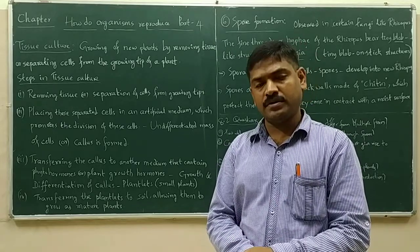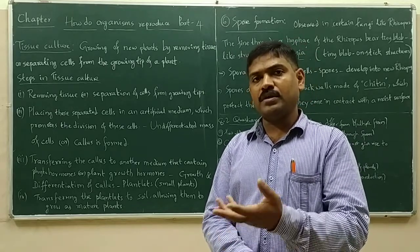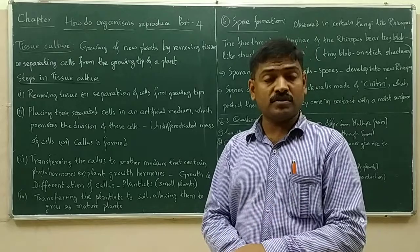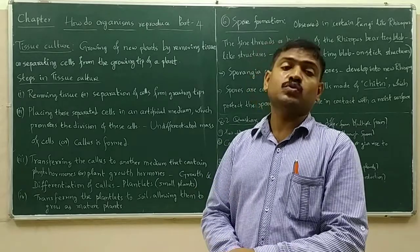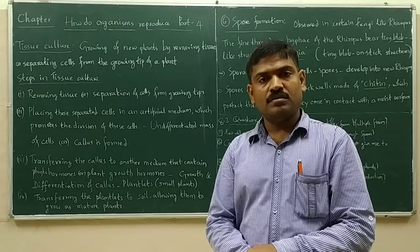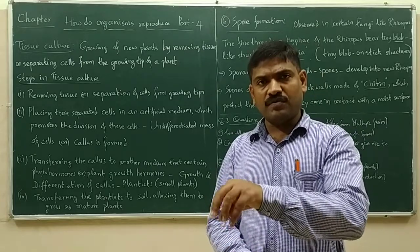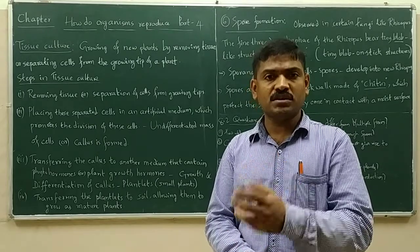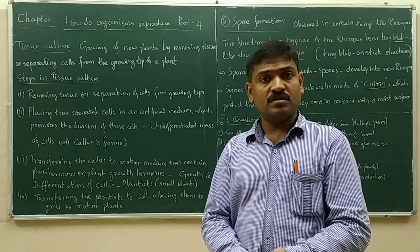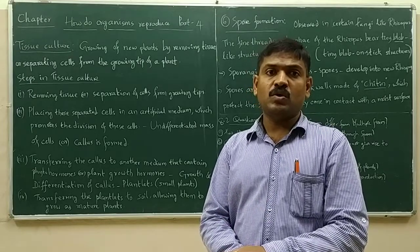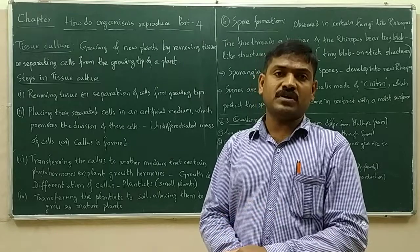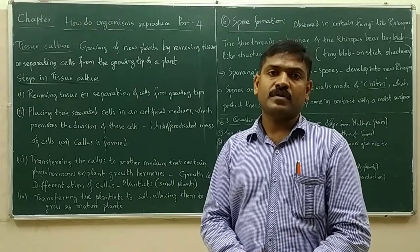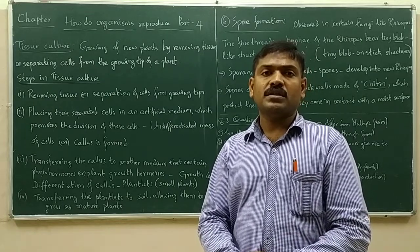If we observe plants from the aspect of vegetative propagation, we get new plants from vegetative propagates — from parts of a stem, from the part of a root, from the part of a leaf. This means the parts of stem, root, and leaf have cells which can give rise to all other types of cells — total types of cells — from which a new plant can be constructed.